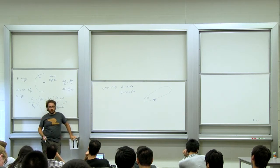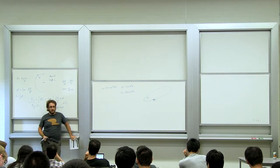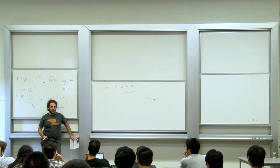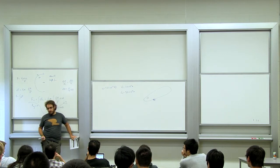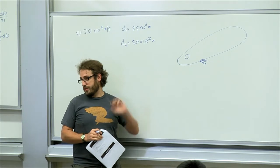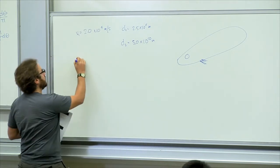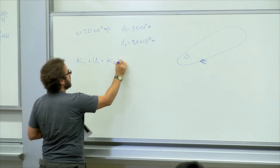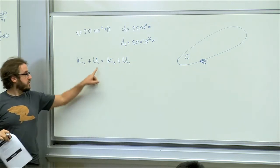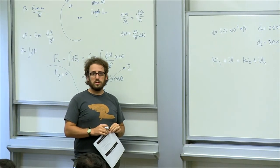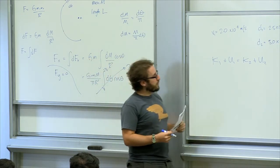We have a comet in some very eccentric elliptical orbit. We're given velocity and distance at one point, distance at another, and asked to find the velocity. Calculating the ellipse and propagating through time seems like a pain. Is there an easier way? Conservation of energy. Is energy conserved? Yes — in the system of just the comet, kinetic energy plus gravitational potential energy is conserved.